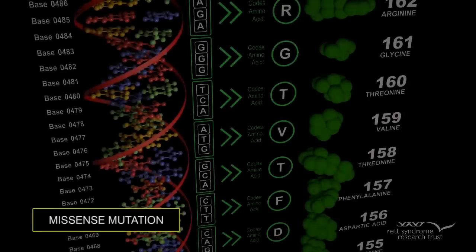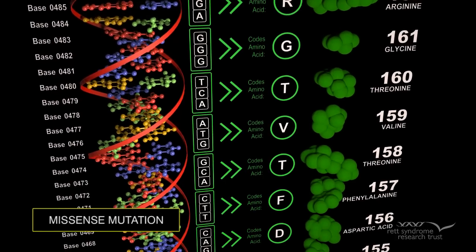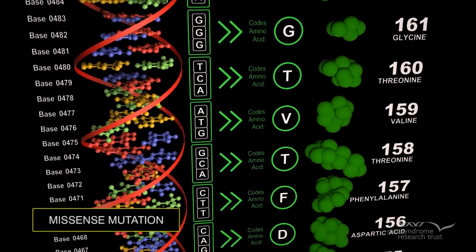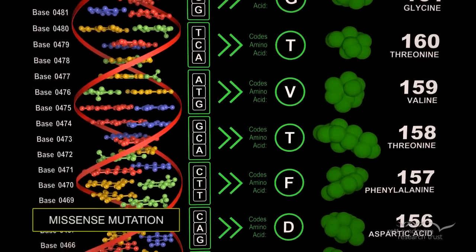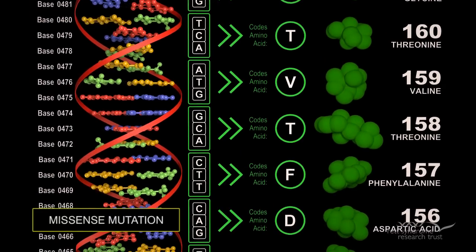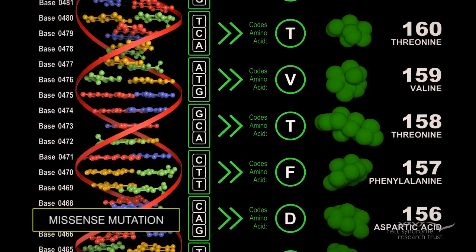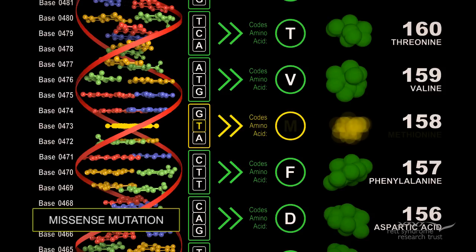Missense mutation: This type of mutation is a change in one DNA base pair that results in the substitution of one amino acid for another. For example, in the most common RET mutation at base 473, there should have been a C base, but due to the mutation there is now a T. This results in a different amino acid being encoded.